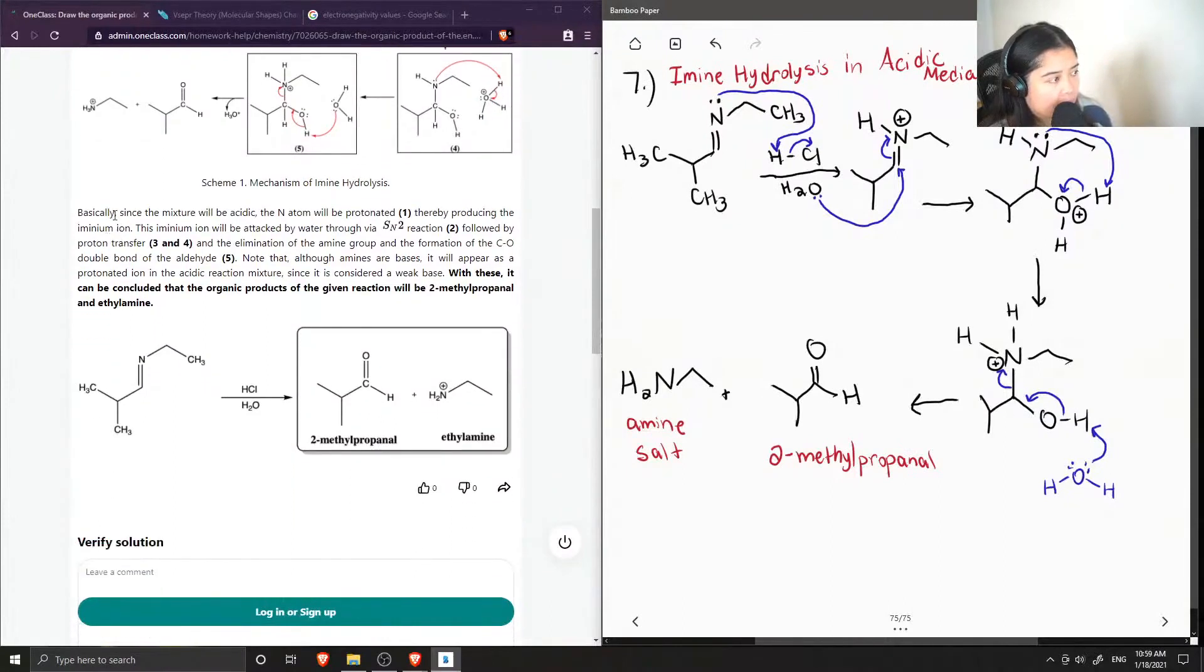Okay, so basically, since the mixture will be acidic, the nitrogen atom will be protonated, thereby producing the iminium ion. This iminium ion will be attacked by water via SN2 reaction, followed by proton transfer, and the elimination of the amine group, formation of the CO double bond of aldehyde.